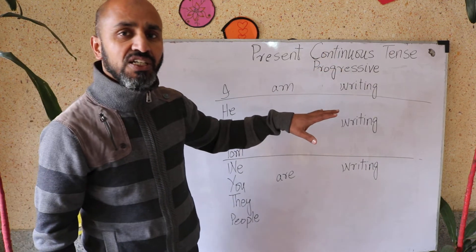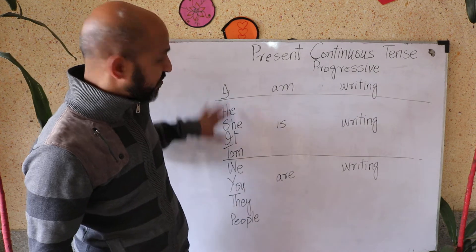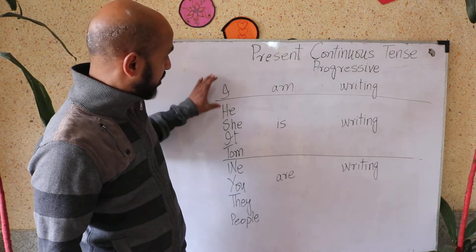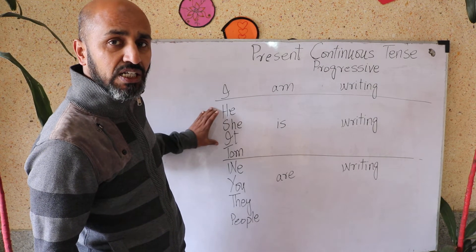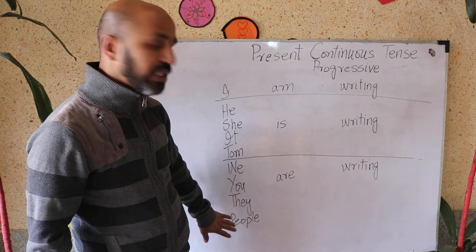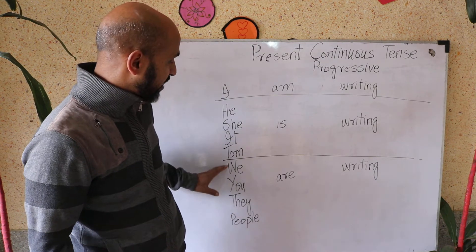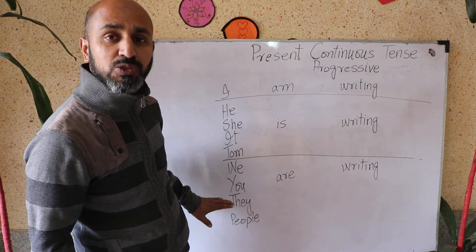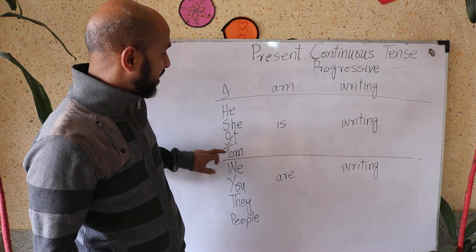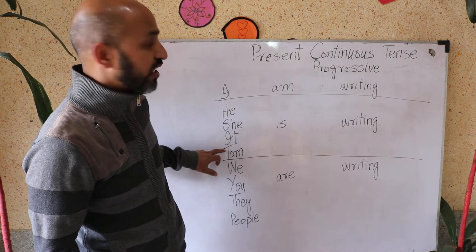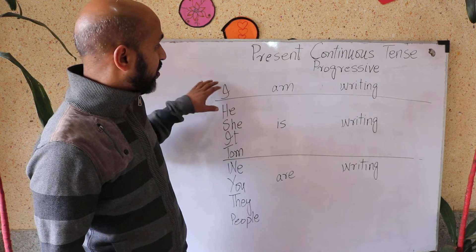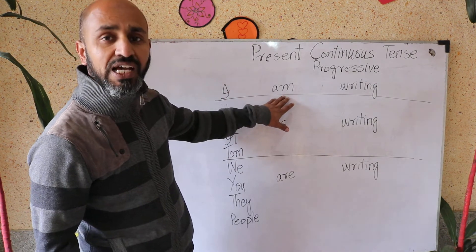In this tense we have three sets of subjects: 'I' alone; 'he', 'she', 'it', and singular nouns like Tom; and 'we', 'you', 'they', and plural nouns like 'people'. All other subjects are plural as well. 'He', 'she', 'it', and Tom are the singular group, where Tom is a singular noun.